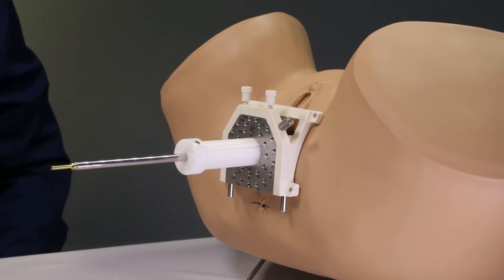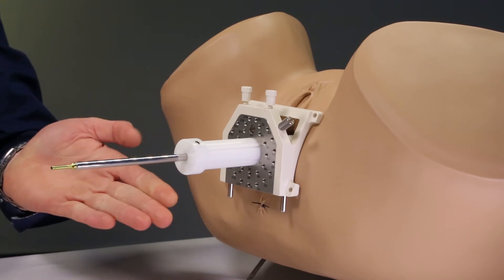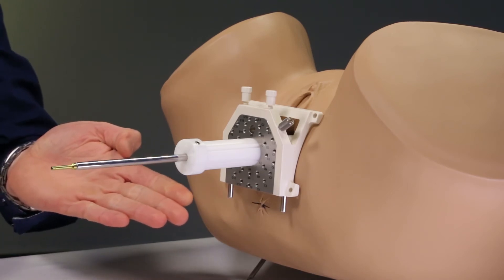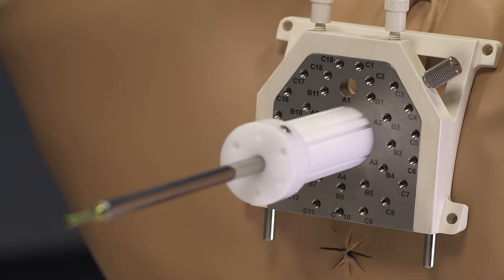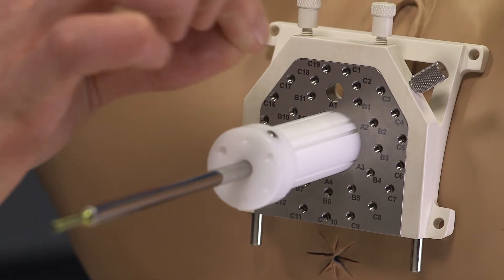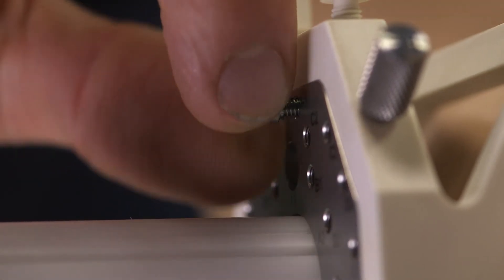At this point we are ready to connect the template to the patient by using the four suture holes of the template, but this is not required. Prior to the insertion of the interstitial needles we can screw in the needle collets.